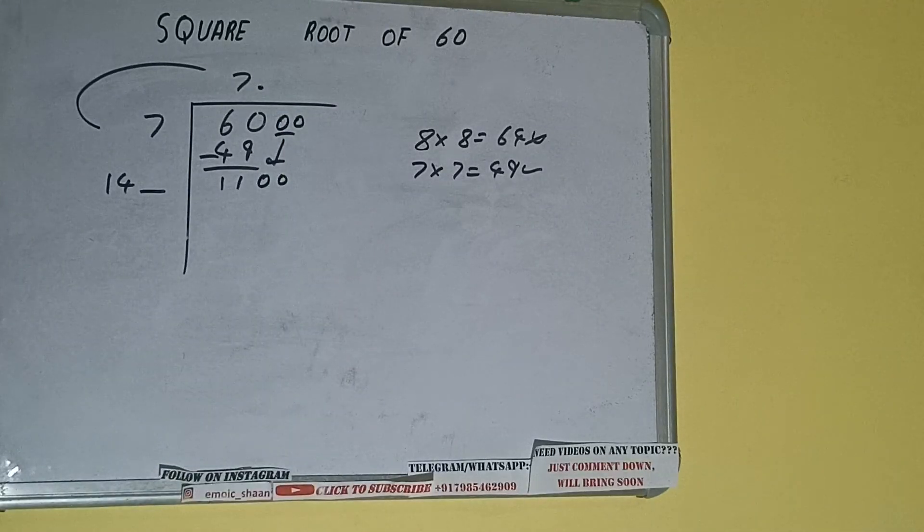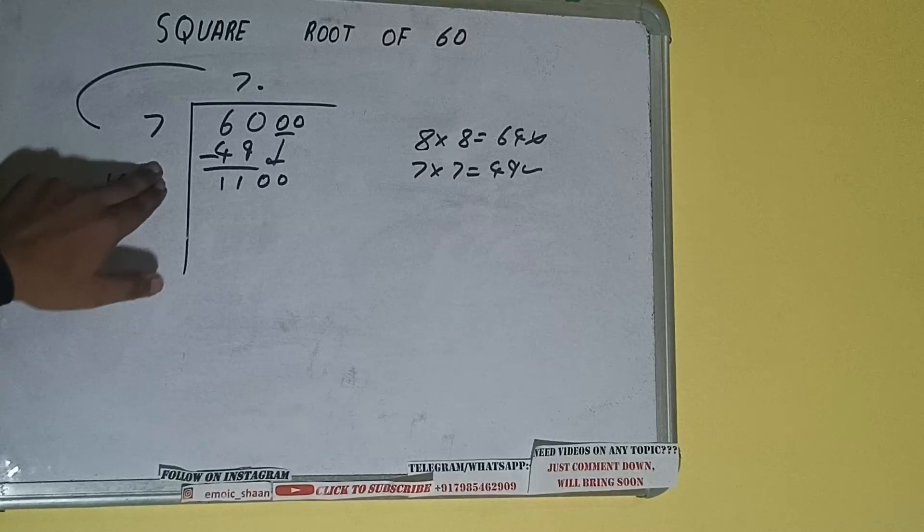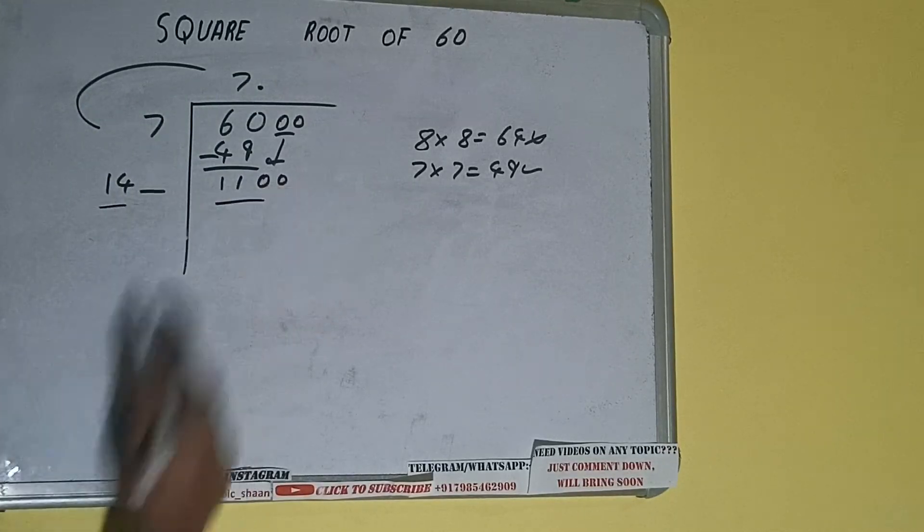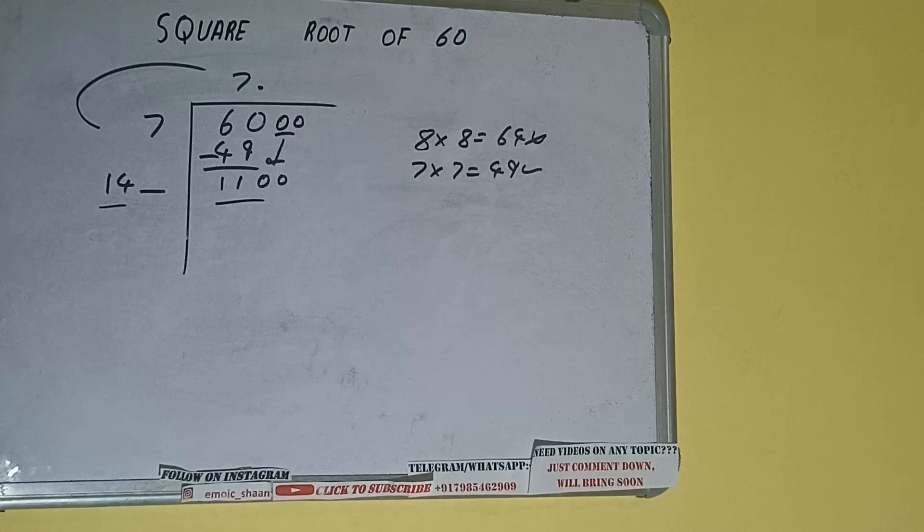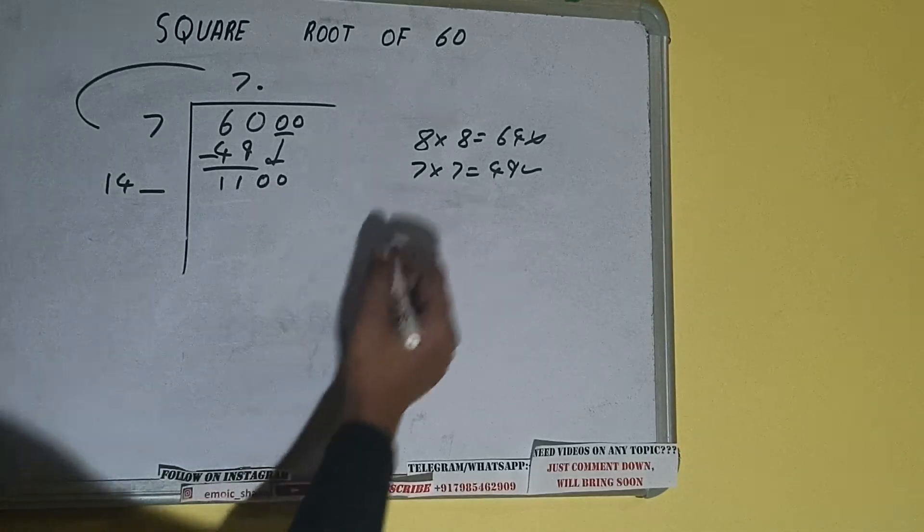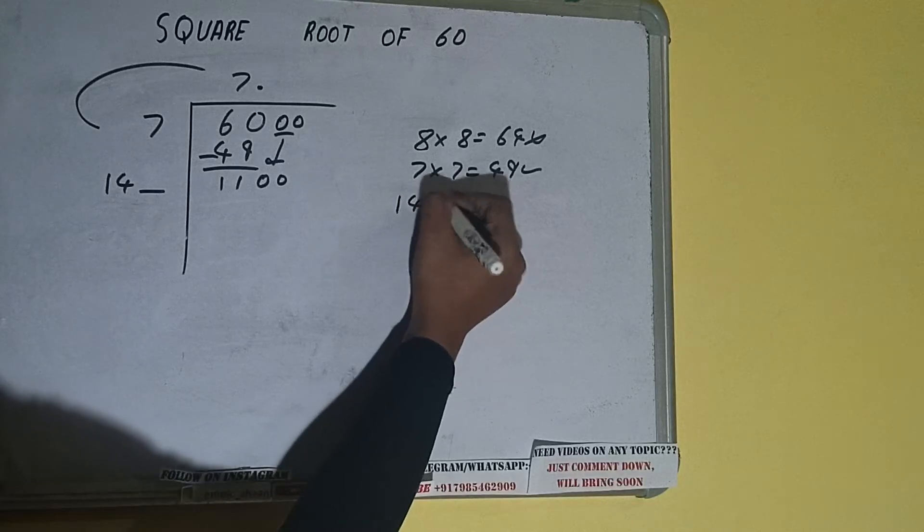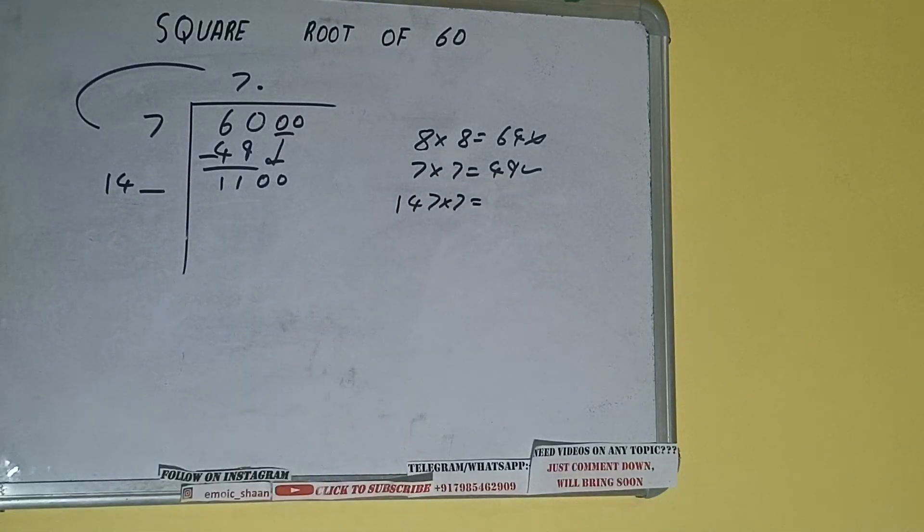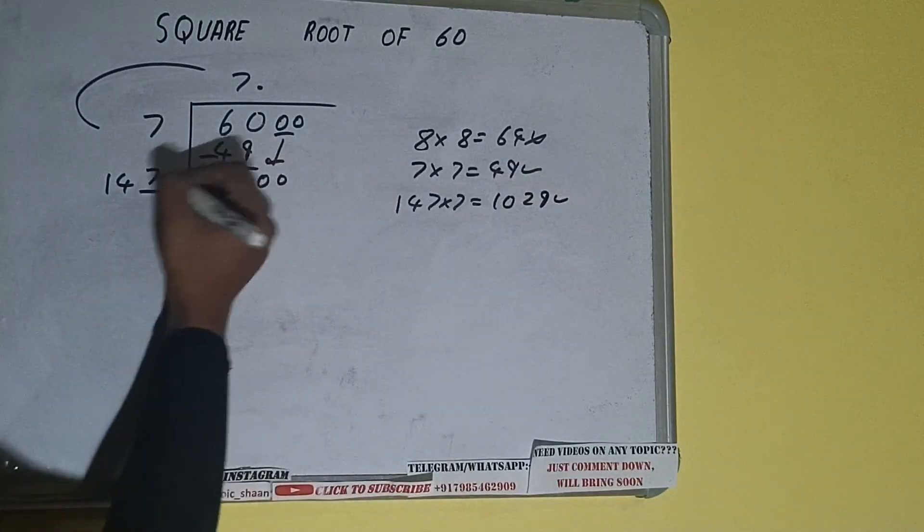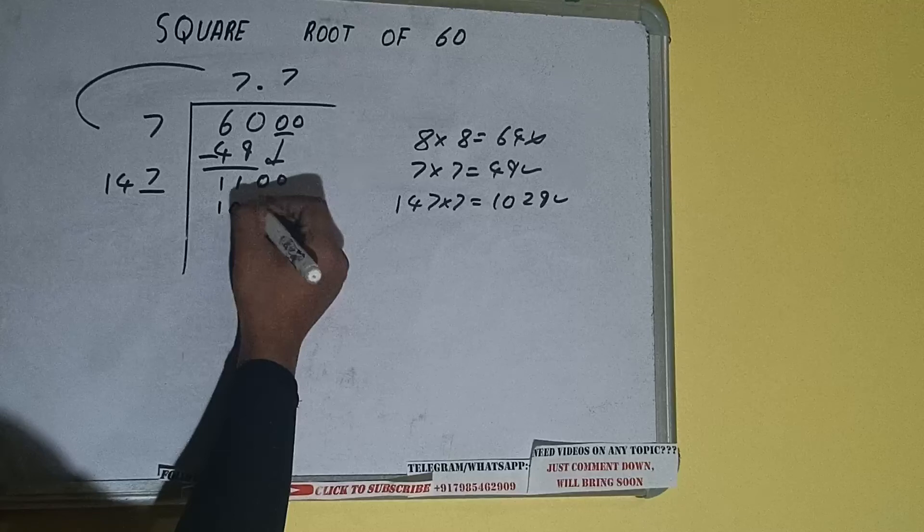Now whatever number we write here, we have to write here also. So we can compare this 14 and 110. So 14 times 8 is 112, we cannot try 8 times. We can try 7 times. 147 into 7 we can try. It will be 1029, which is good to take.